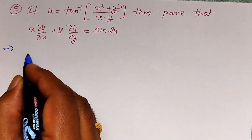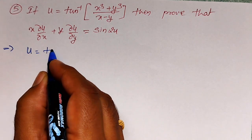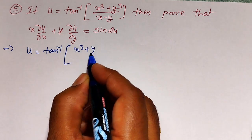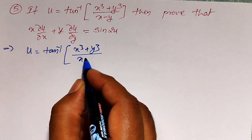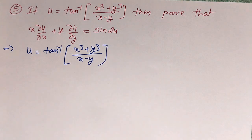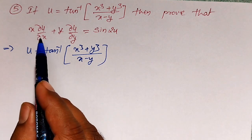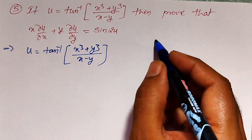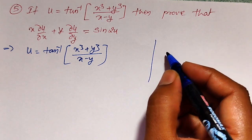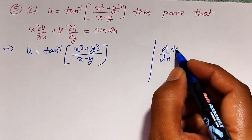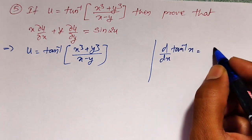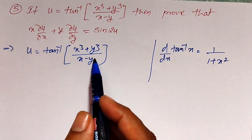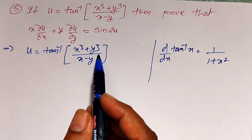For that, let me consider again u equal to tan inverse of x cube plus y cube divided by x minus y. To differentiate partially with respect to x and y, this one I have to differentiate. As we know, the derivative of tan inverse x is 1 divided by 1 plus x square.